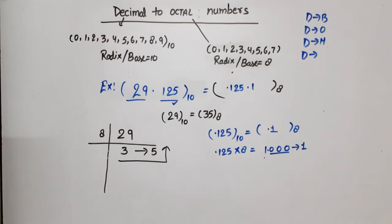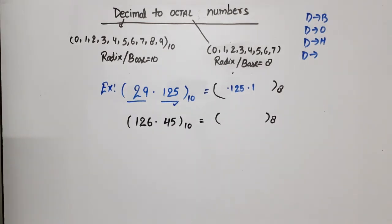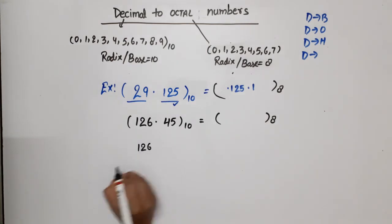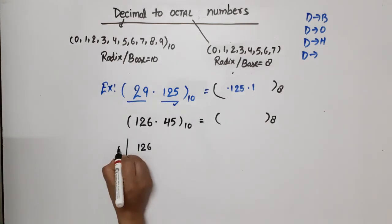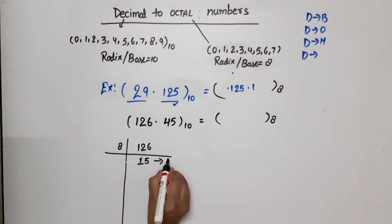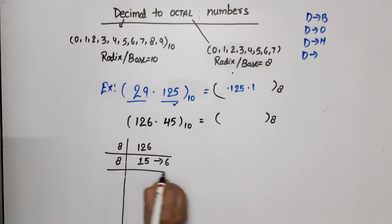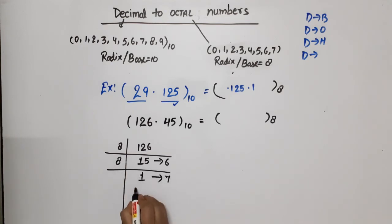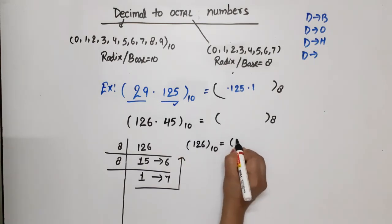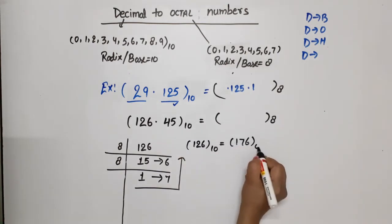Let me take a bigger example: 126.45. First the integer part 126 converted to octal — divide by 8: 126 ÷ 8 = 15 remainder 6. Then 15 ÷ 8 = 1 remainder 7. Since 1 is less than 8 we stop. Reading down to upward: 126 in base 10 equals 176 in base 8.